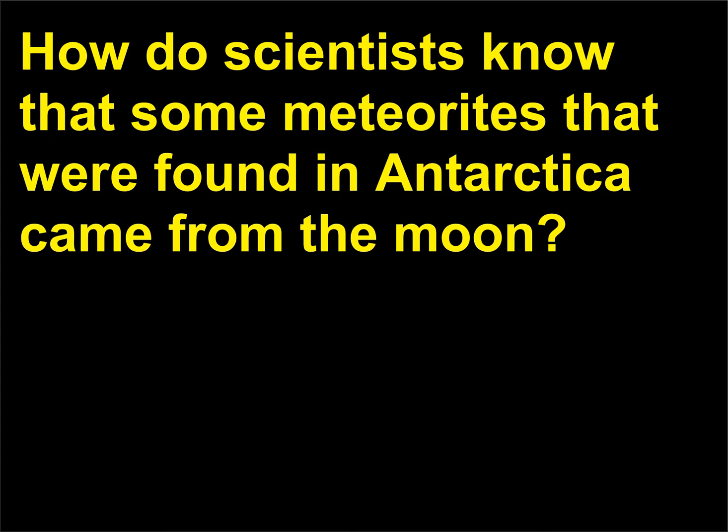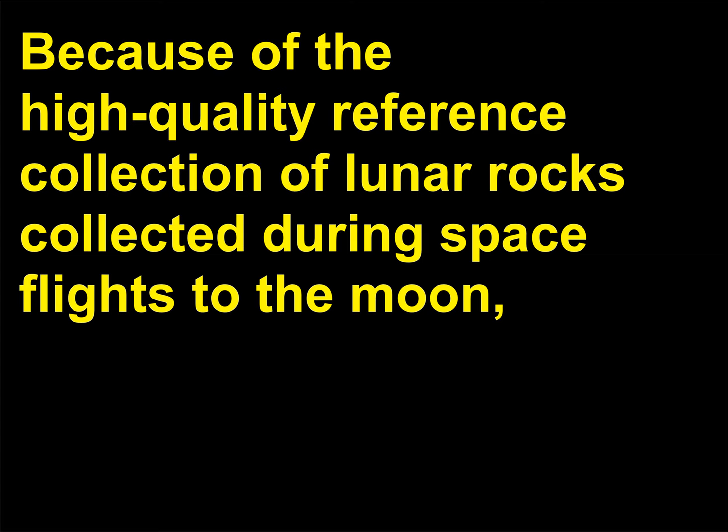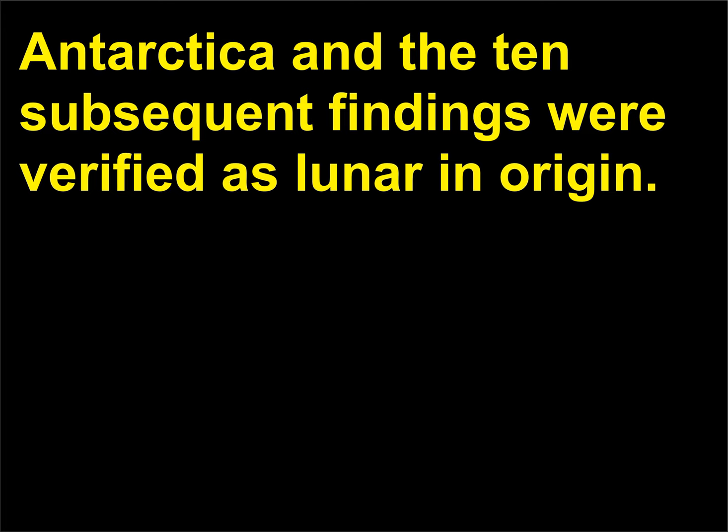How do scientists know that some meteorites found in Antarctica came from the moon? Because of the high-quality reference collection of lunar rocks collected during space flights to the moon, the original 1979 meteorite find in Antarctica and the 10 subsequent findings were verified as lunar in origin.